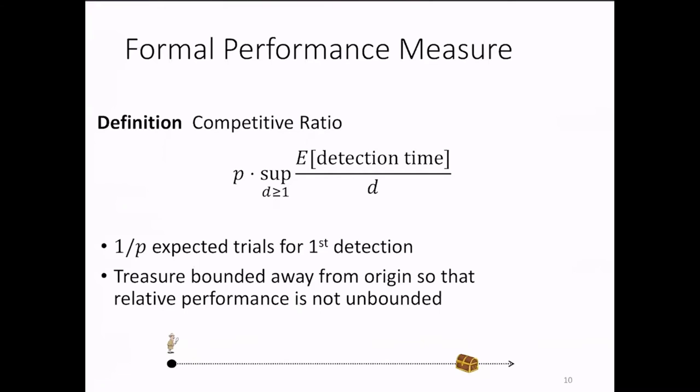The reason we normalize by d is so that for each p the performance remains bounded. Otherwise, placing the treasure arbitrarily far away from the origin would induce unbound detection time.